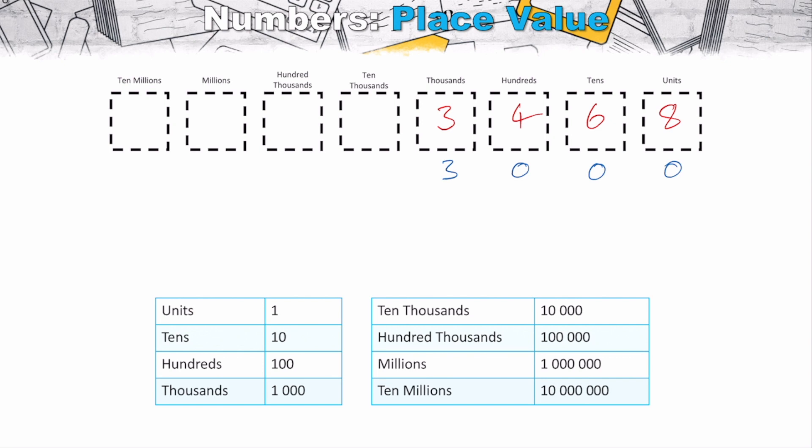And the four represents four lots of our hundreds. Our tens represent six lots of our tens and our units here represent eight single units, which when we're not dealing with parts of numbers, decimals, fractions, the units is going to be our smallest value that we're representing here.